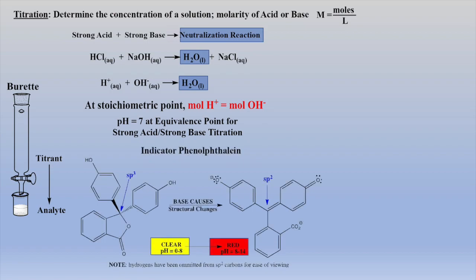The endpoint of a titration is when a color change is observed by an indicator. The trick is to have the indicator change color at or near the pH of the equivalence point. A common indicator used for titrations of strong acids and bases is phenolphthalein, which is inexpensive, stable, and undergoes color change at approximately pH 8 to 10.